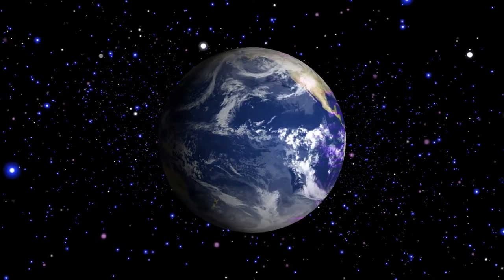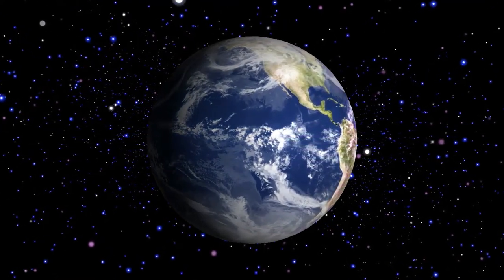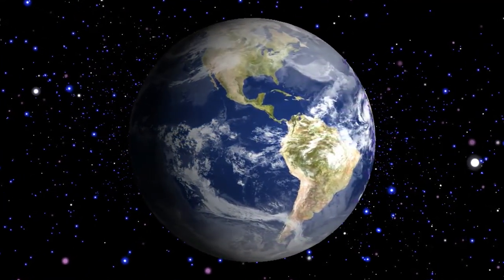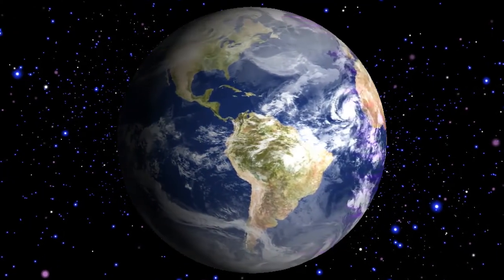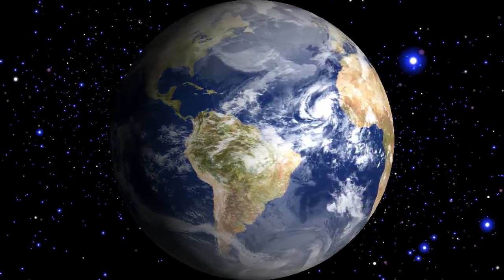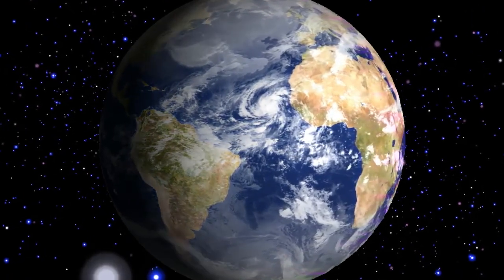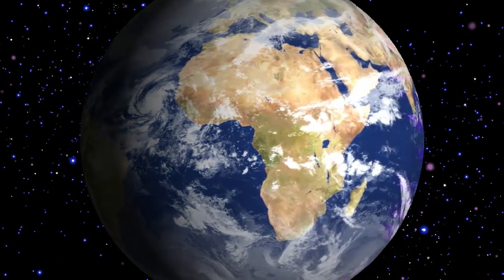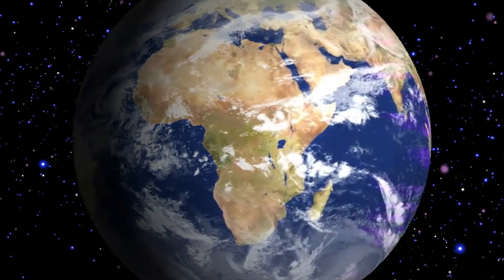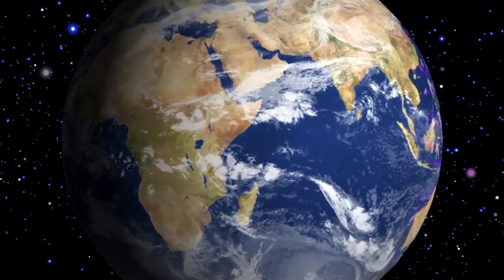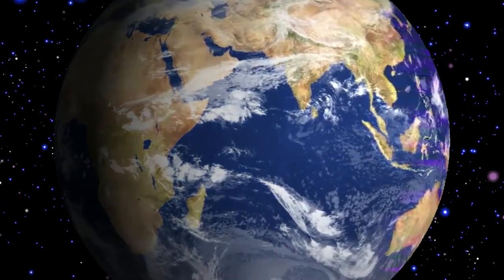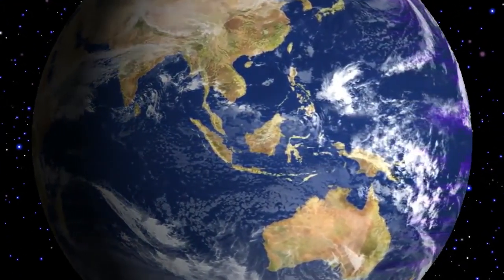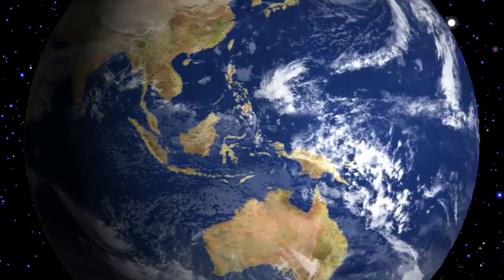And God said, see, I give you every plant which grows on the earth and every tree which bears fruit with its own kind of seed. It shall be food for you. And to every wild beast and to every bird of the sky and everything that crawls on the earth and is alive, I give every green herb for food. And it was done. And when God saw everything that he had made, he saw that it was very good. And there was an evening and a morning making the sixth day.